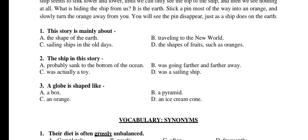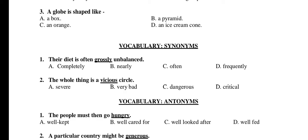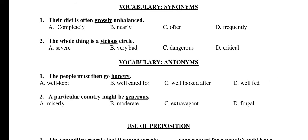Vocabulary — Synonyms. Question 1: Their diet is often grossly unbalanced. A) completely, B) nearly, C) often, D) frequently. The right answer is A: completely. Question 2: The whole thing is a vicious circle. A) severe, B) very bad, C) dangerous, D) critical. The right answer is B: very bad.